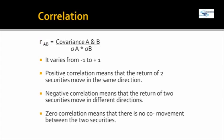A better measure for studying covariance is correlation. Correlation is the covariance of two securities divided by the product of their standard deviations. It generally ranges from minus 1 to plus 1. If the value is 0 to plus 1, there is positive correlation and both securities move in the same direction. If the value is 0 to minus 1, there is negative correlation and securities move in opposite directions. If the value is 0, there is no co-movement between the two securities.